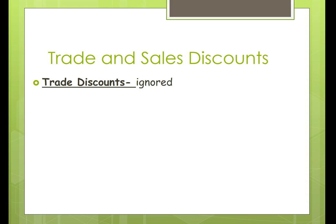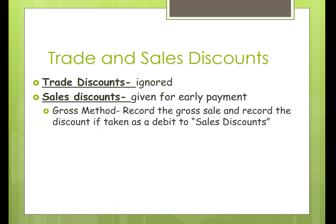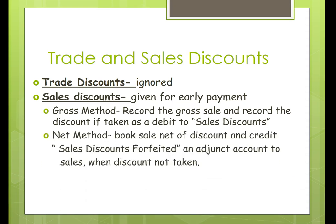Now, discounts. Trade discounts are ignored — this is when someone says if you buy in volume you pay less, and you simply record the sale at the lower amount. Then we have sales discounts, which are given for early payment. Under the gross method, we record the gross sale and record the discount if taken as a debit to sales discounts, which is a contra sales account on the income statement reducing sales. Under the net method, we book the sale net of the discount and credit sales discount forfeited, which is an adjunct account to sales that adds to sales on the income statement when the discount is not taken.